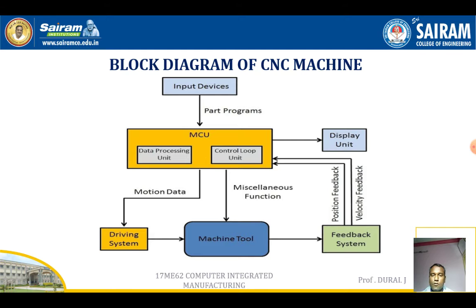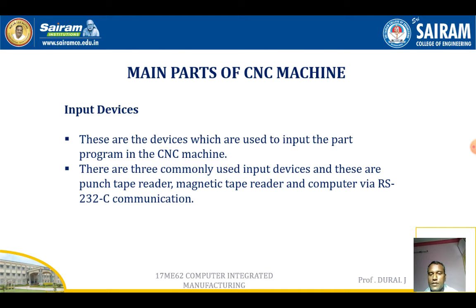The major components of CNC machines — there are three major components. One will be the input devices, the second one will be the machine control unit, and the third one is the machine tool devices. Input devices are also called programmed instructions.